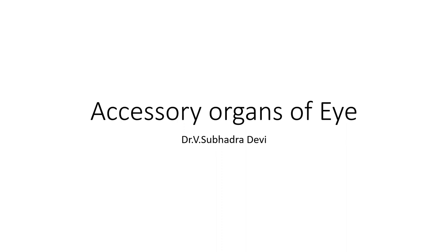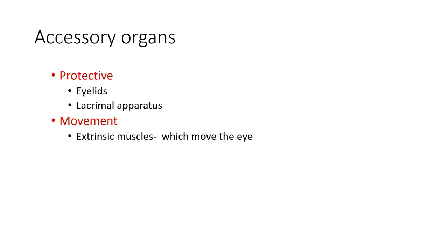Dear students, let us now study the accessory organs of the eye. The function of these accessory organs is to protect the eyeball and facilitate movement of the eyeballs. The organs concerned with protection are the eyelids and lacrimal apparatus, and for movement there are what are known as extrinsic muscles of the eyeball.